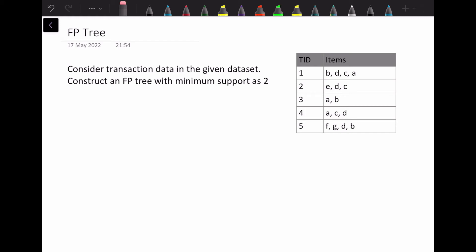In this video we'll be learning how to construct an FP tree for a given dataset. Consider this transaction data, and with this transactional data we have to construct an FP tree with minimum support as 2. There are a couple of steps involved.